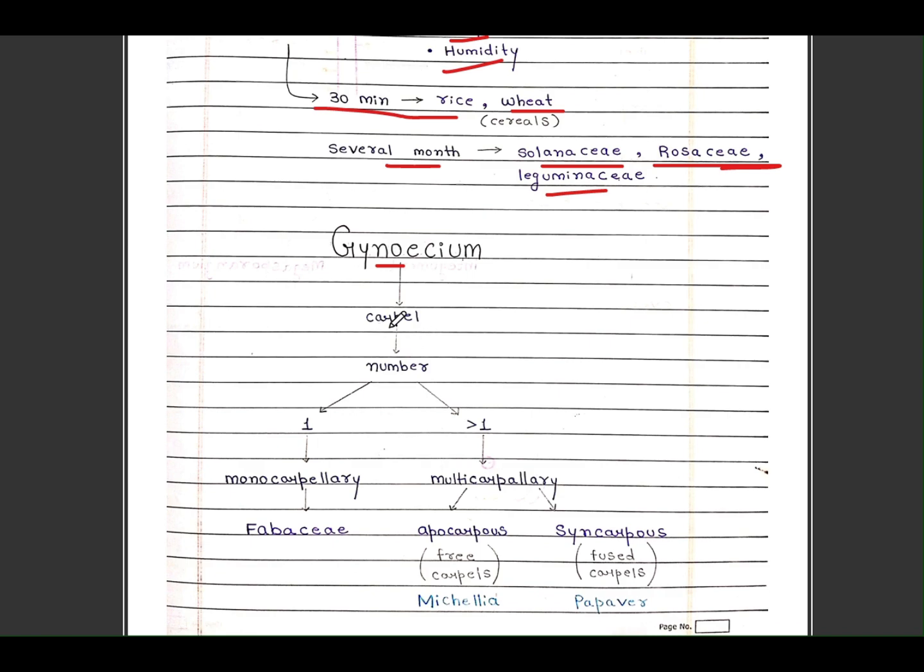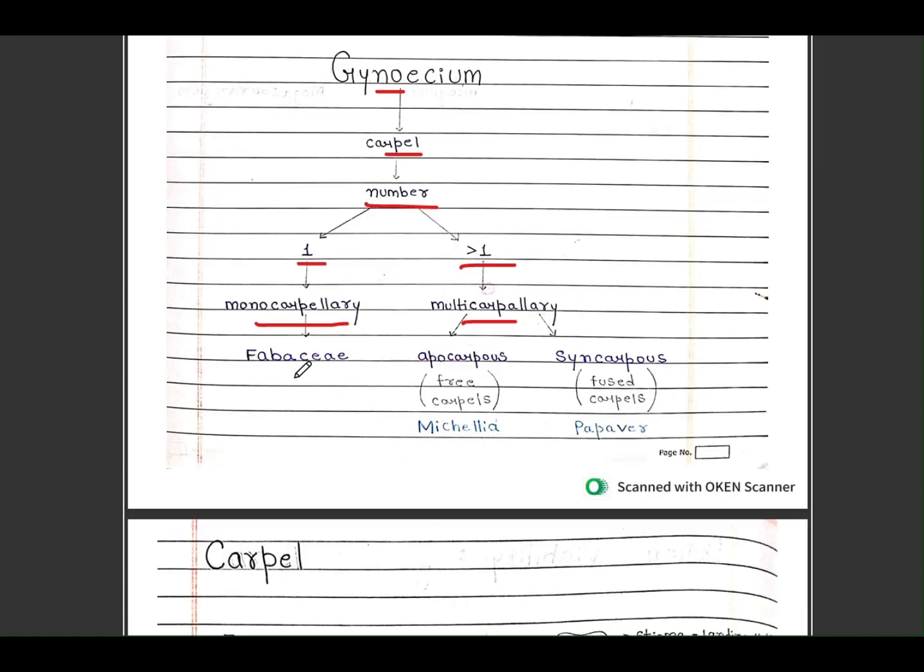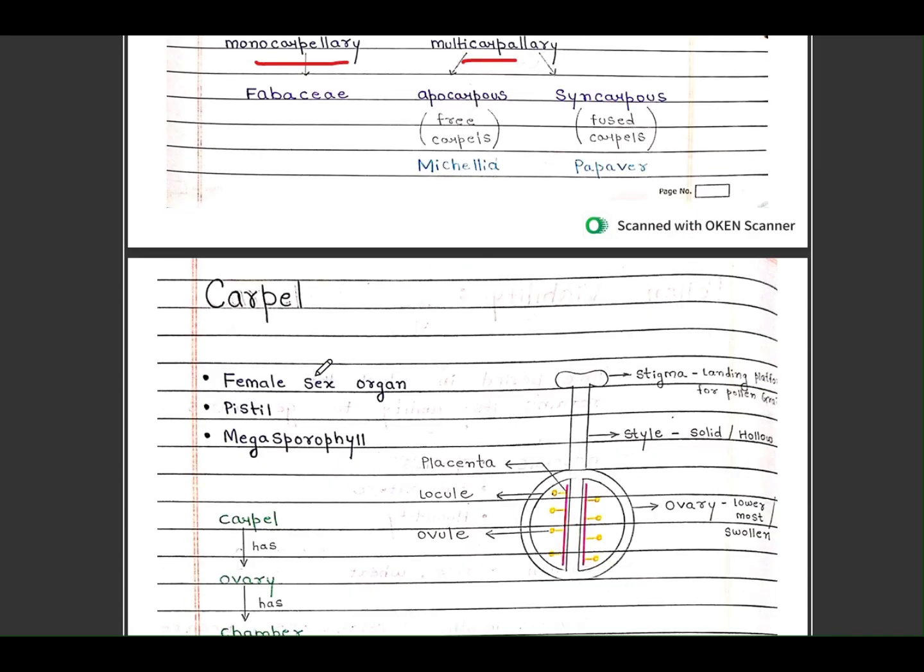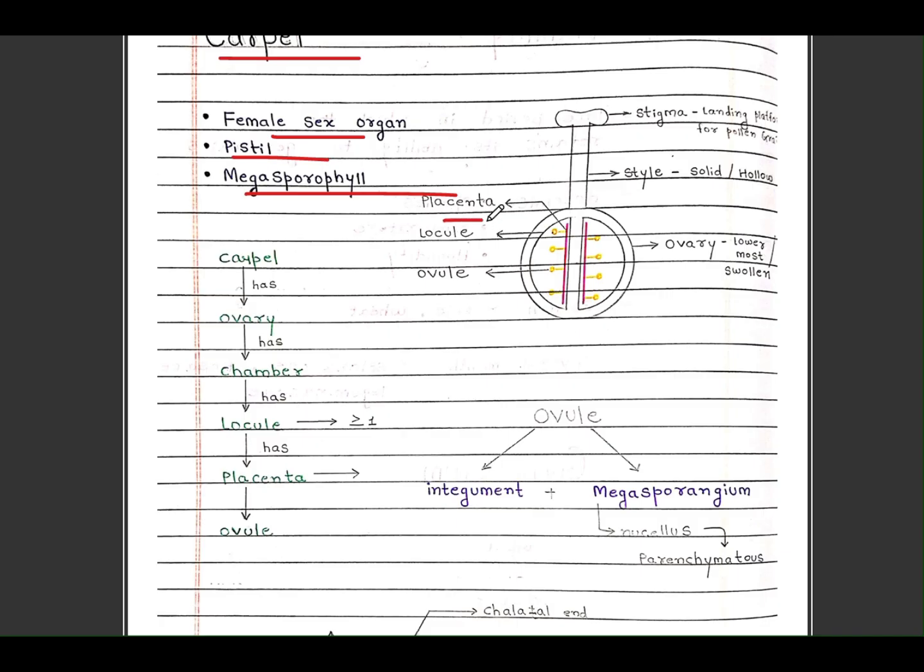Gynoecium: carpel number one or less than one. One is monocarpillary, more than one is multicarpillary. Carpel is the female sex organ, also called pistil or megasporophyll. Here are the parts: placenta, locule, ovule, ovary, style, stigma. You can see the diagram here.